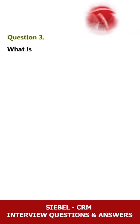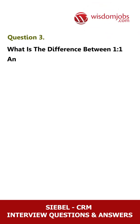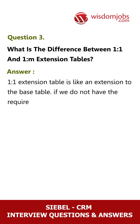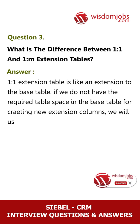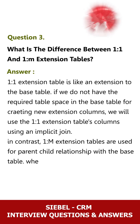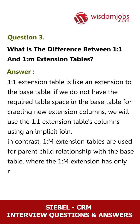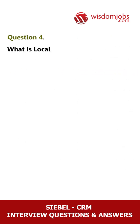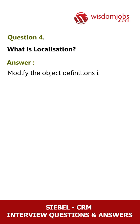Question 3: What is the difference between 1:1 and 1:M extension tables? Answer: A 1:1 extension table is like an extension to the base table. If we do not have the required table space in the base table for creating new extension columns, we use 1:1 extension tables columns using an implicit join. In contrast, 1:M extension tables are used for parent-child relationships with the base table, where the 1:M extension has only a relation to the base table.